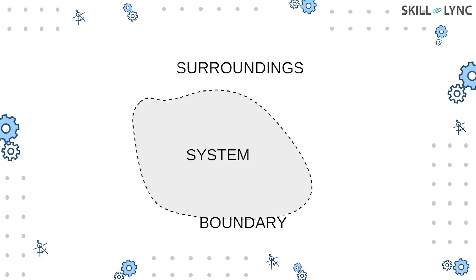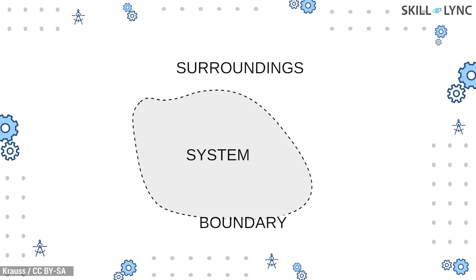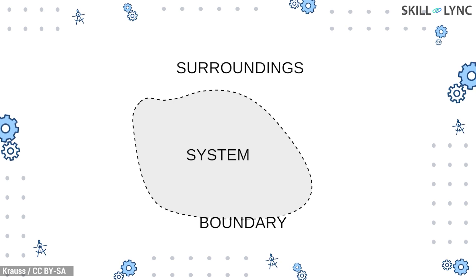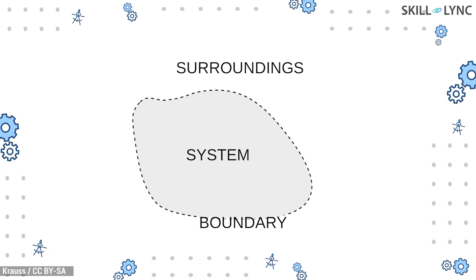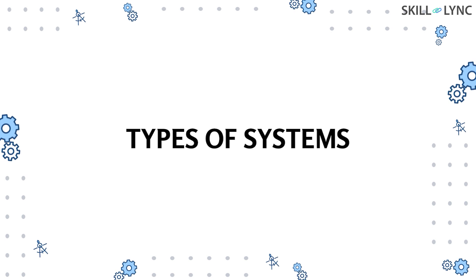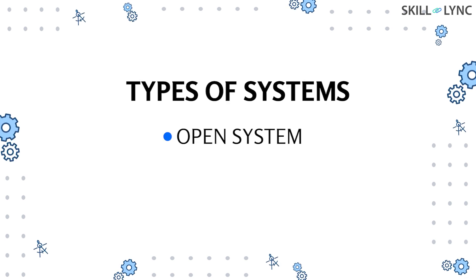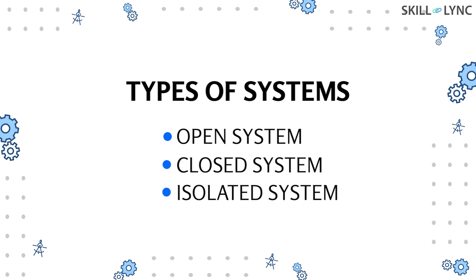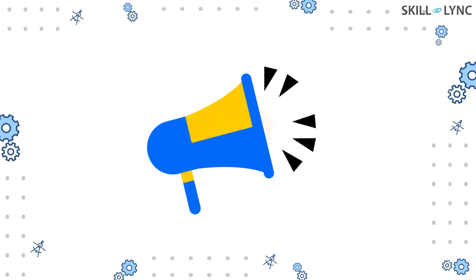In simple terms, a system is a definite region or space in which thermodynamic processes take place. Everything outside this thermodynamic system is termed as surroundings. The system and surroundings are separated by the thermodynamic boundary. There are three main types of thermodynamic systems: open systems, closed systems, and isolated systems.